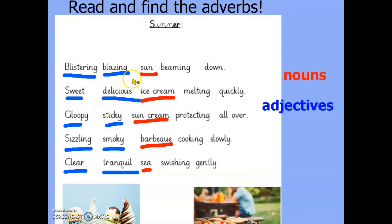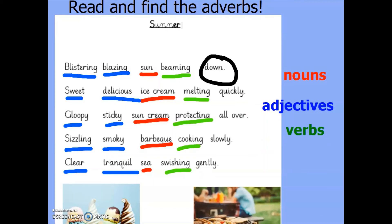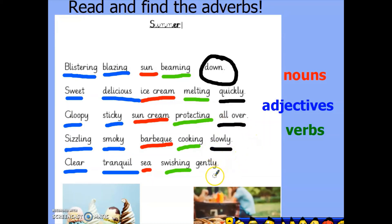For example, the blistering, blazing sun. So which words are the verbs and which are the adverbs? Remember that an adverb adds more information to the verb. In the top line, beaming is the verb, and down is the information — it's telling us that the sun is beaming down onto the earth. So the green words are all verbs. Therefore, the adverbs are quickly, all over — the sun cream was protecting all over our bodies — slowly, and gently, to give more information about how the sea was swishing.